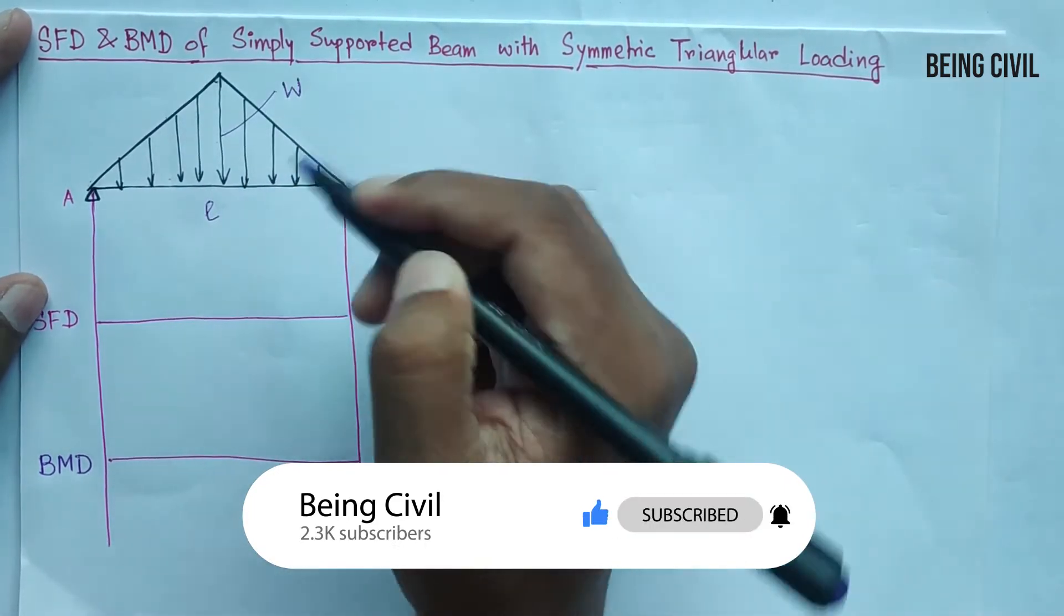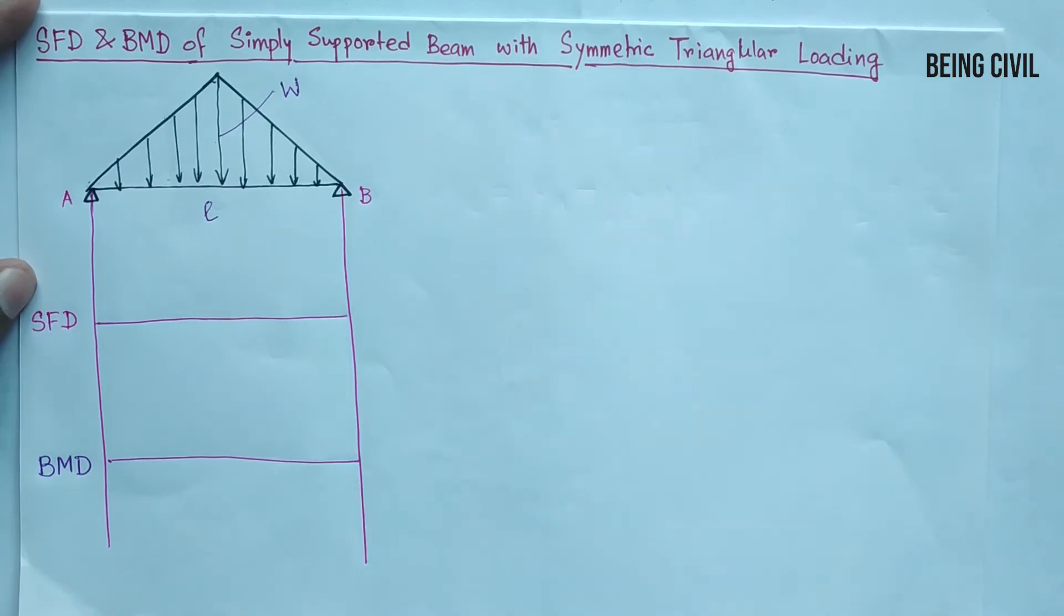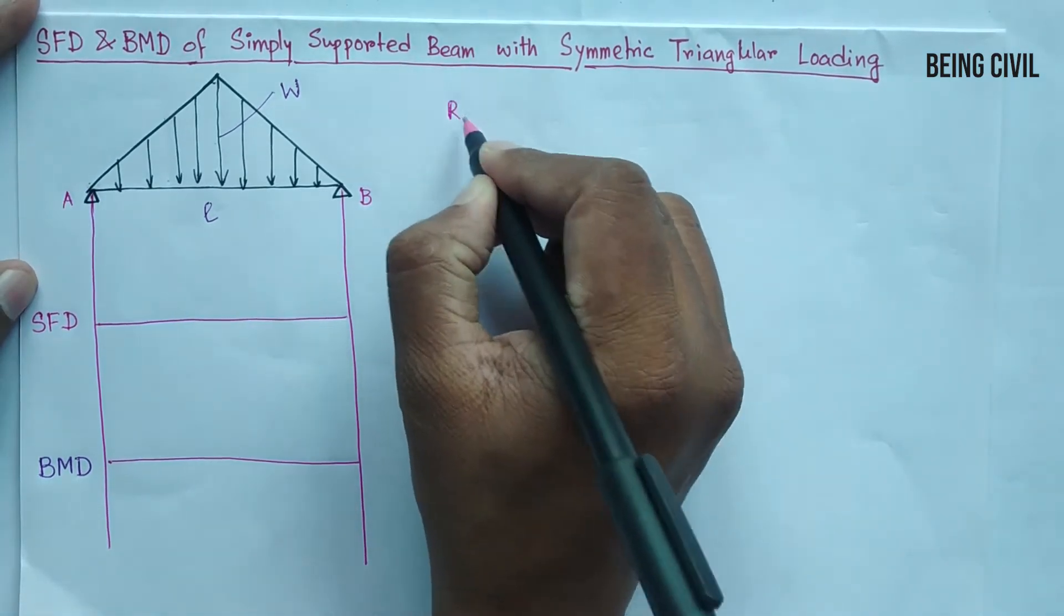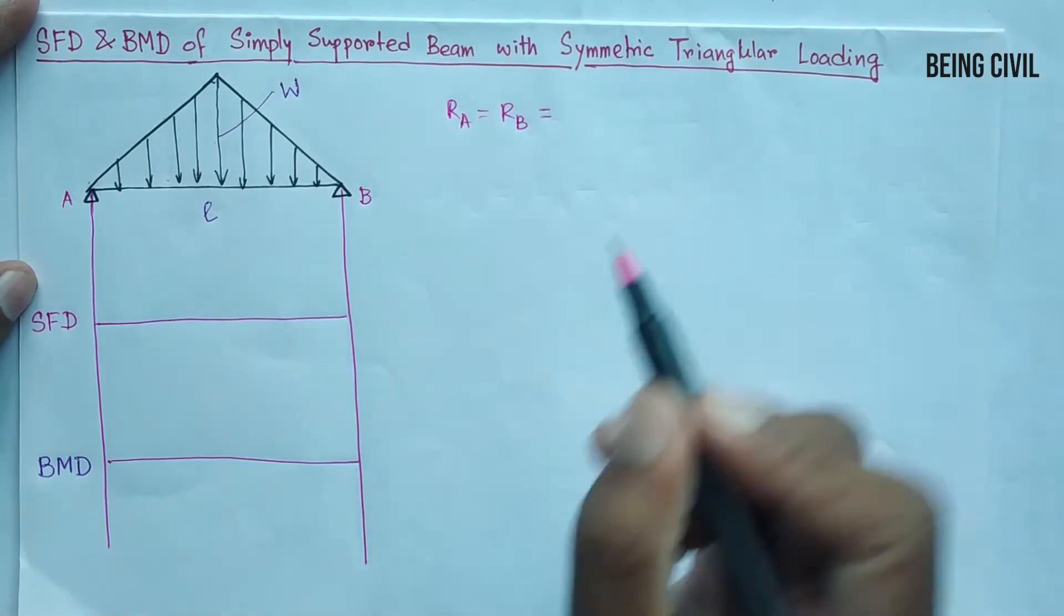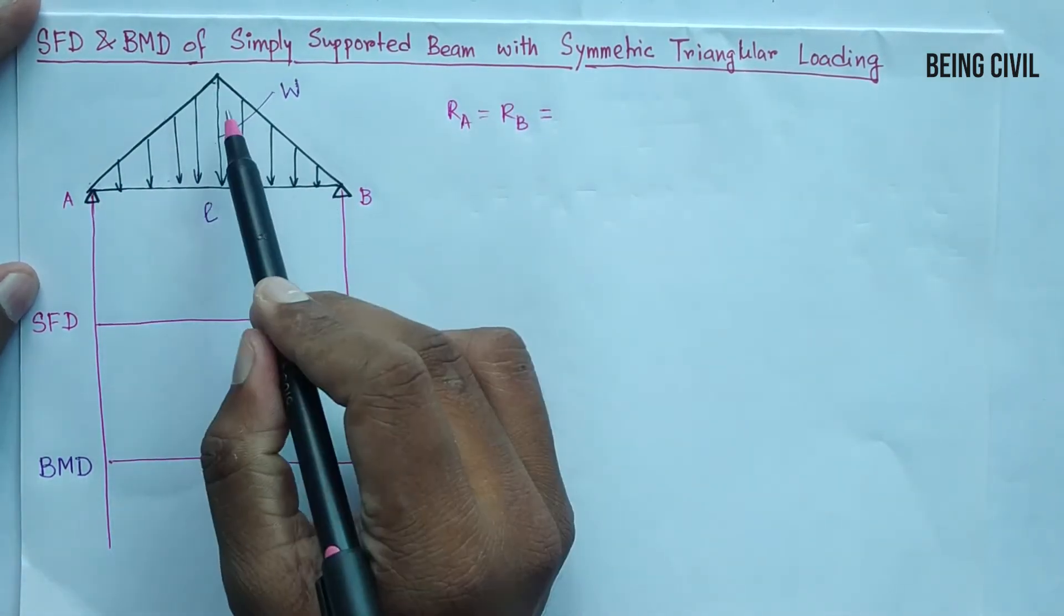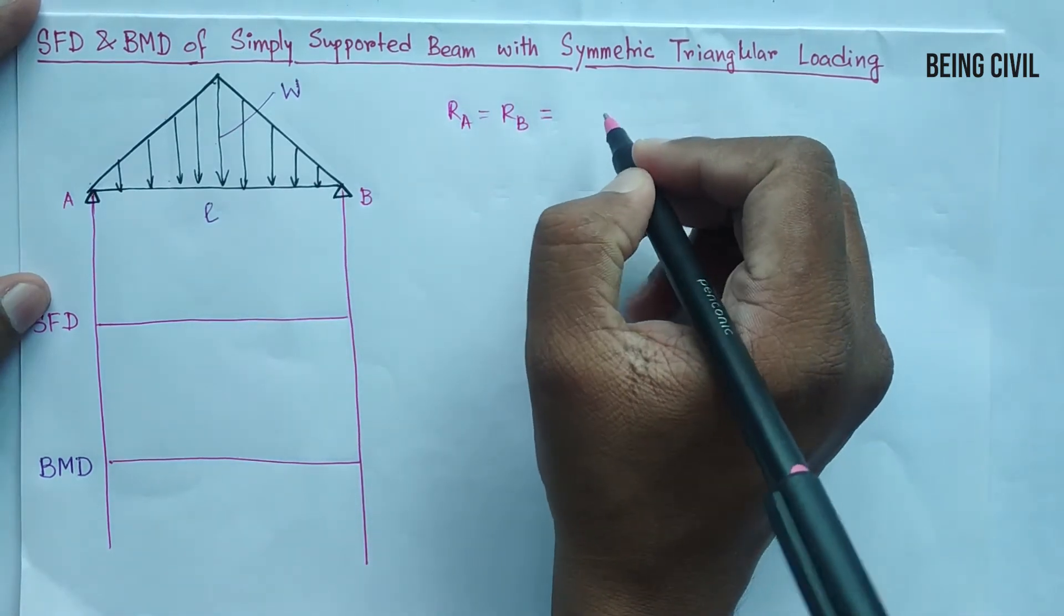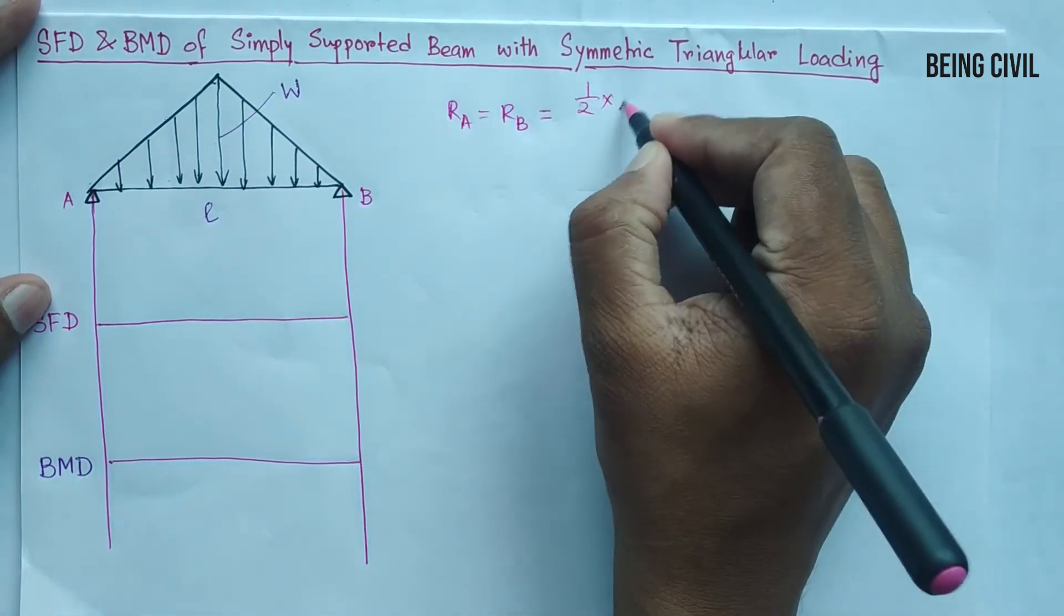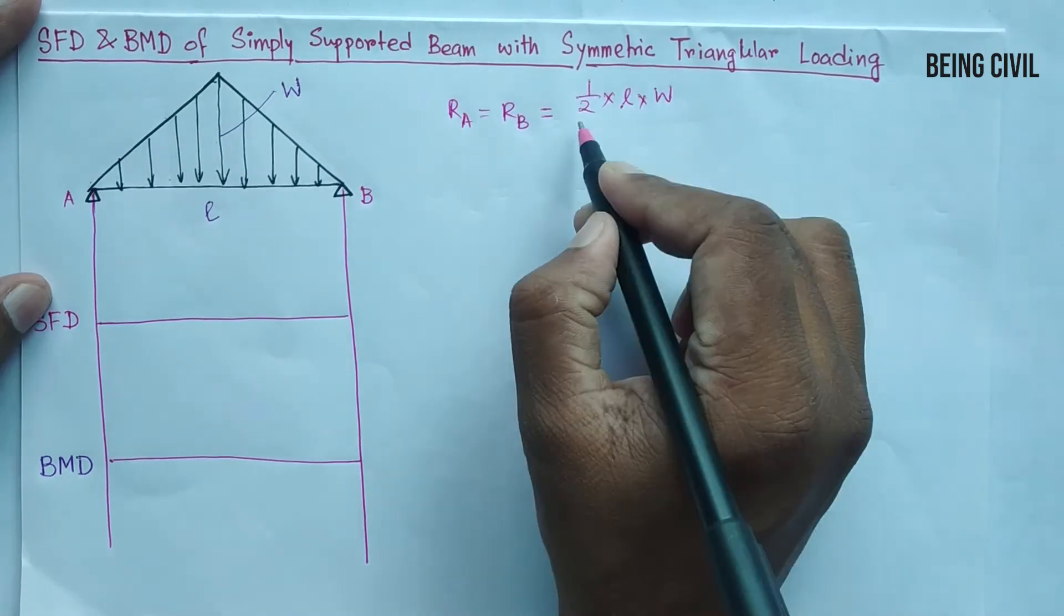First we have to calculate the reactions at A and B which will be equal, so Ra equal to Rb. The total load on this beam is the area of this triangle, so area of this triangle by 2, so half into base is L and height is W.